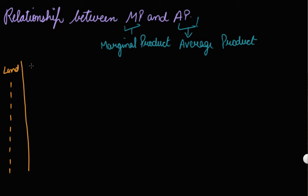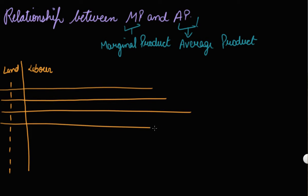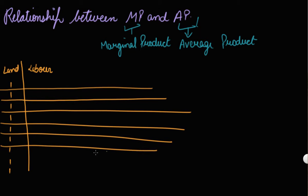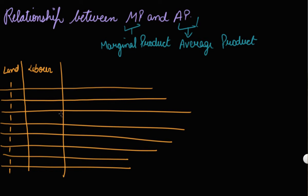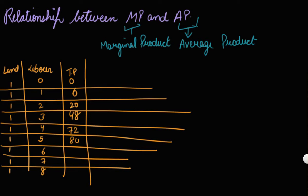Your labour, that is your variable factor of production, is 0, 1, 2, 3, 4, 5, 6, 7, and 8. Then your total product is 0, 6, 20, 48, 72, 80, 84, 84, and 80. Let's calculate your marginal product and then your average product.